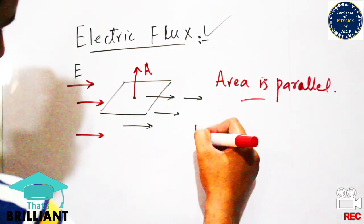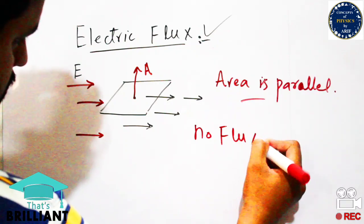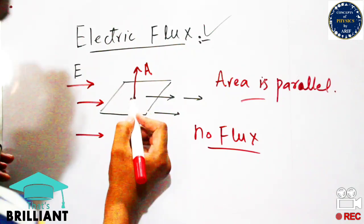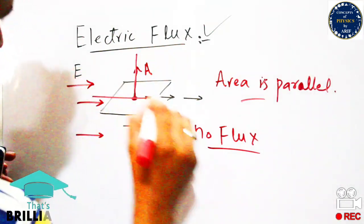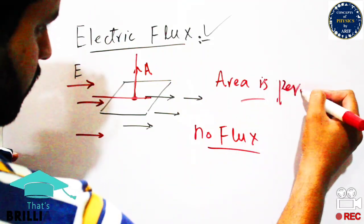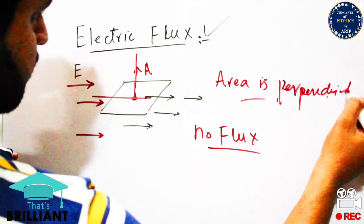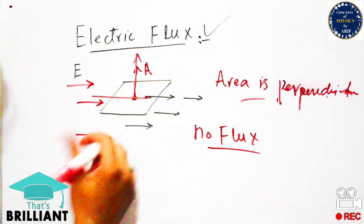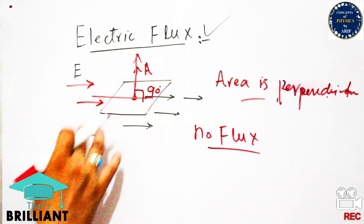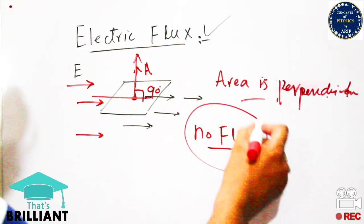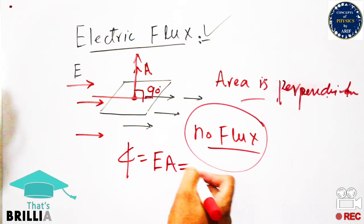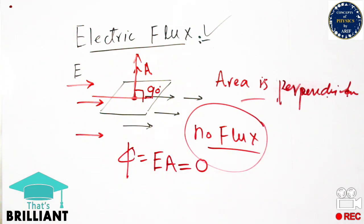The area is placed parallel but its normal is perpendicular to the electric field lines. We focus on the normal of that area — the normal is perpendicular and theta is 90 degrees between area A and E. So for this perpendicular case, no electric field lines pass through this region. Therefore phi equals E times A equals zero when theta is 90 degrees, meaning there is zero or minimum electric flux.